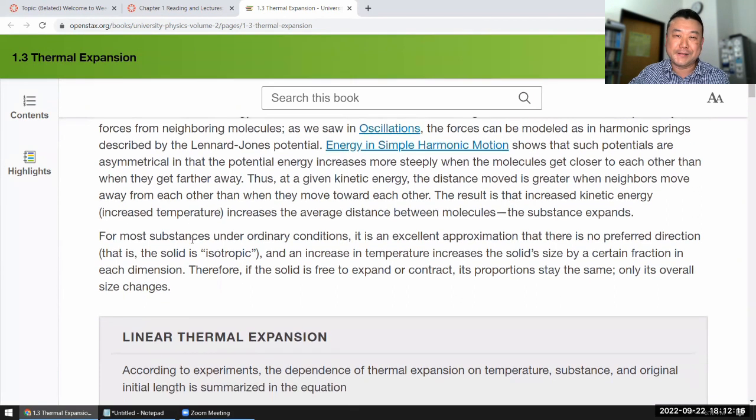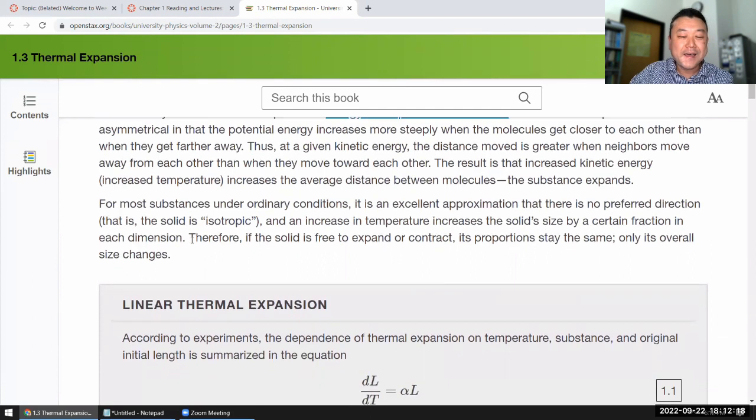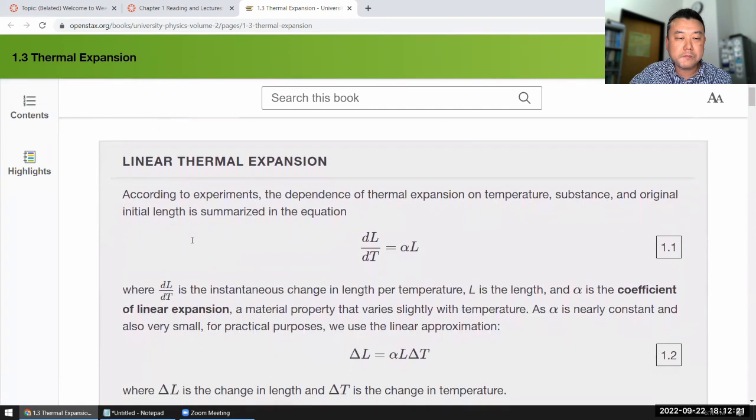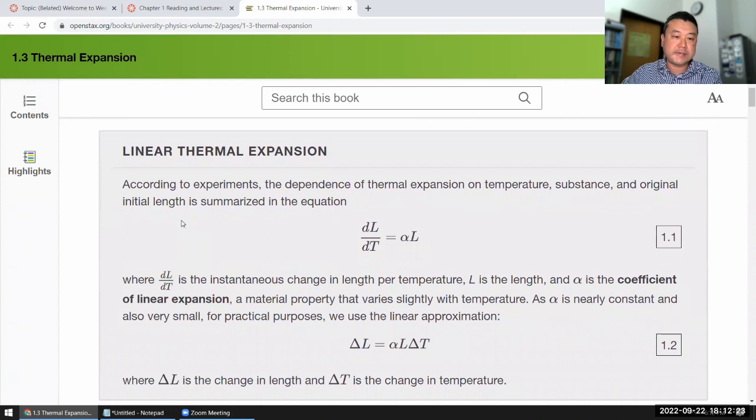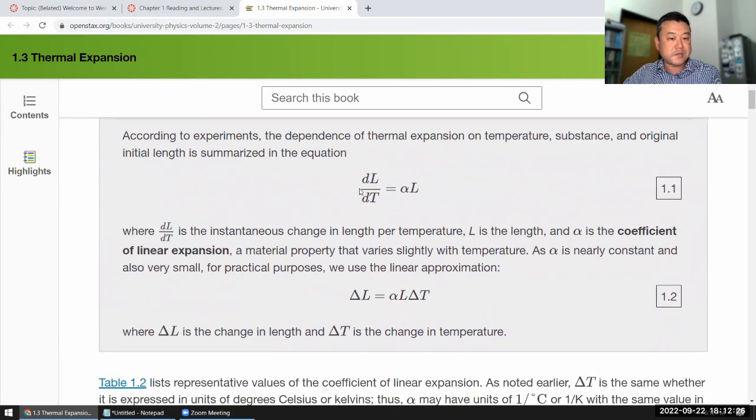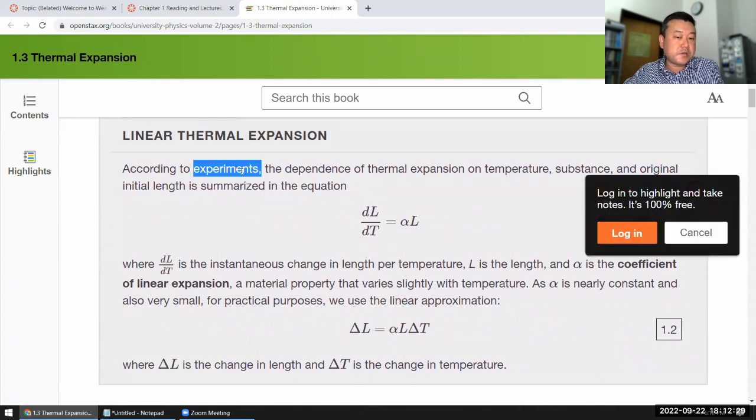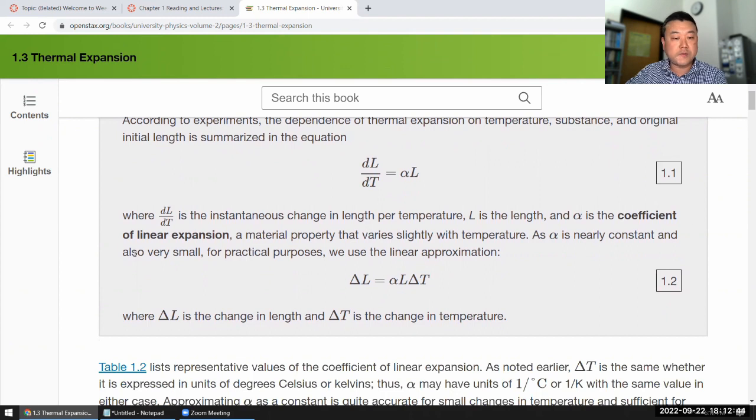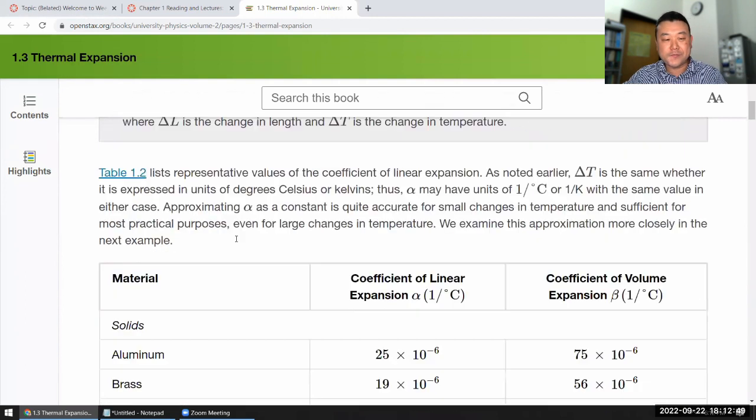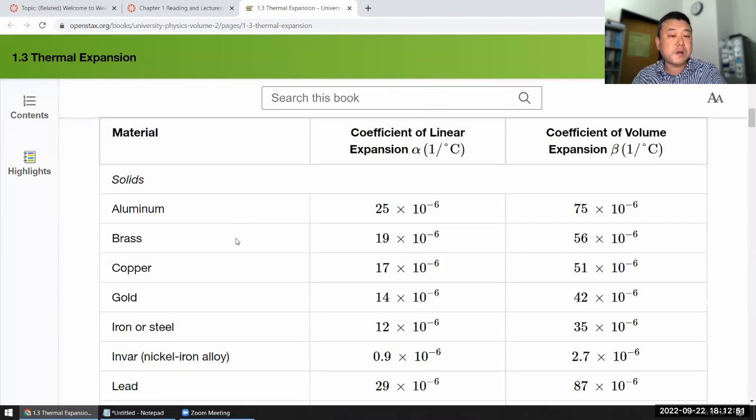The part that is salient is the linear thermal expansion, which is sort of just an experimental observation that people find when temperature of a solid object or even liquid increases, they expand. You can characterize the expansion, and the coefficient of linear expansion is that characterization of that expansion that people have measured. This is all experimentally determined.